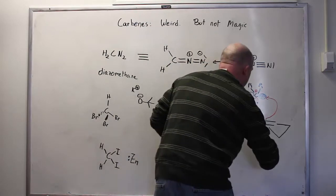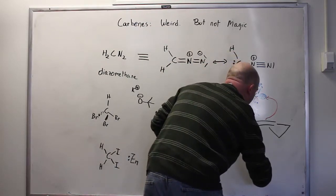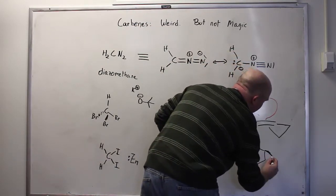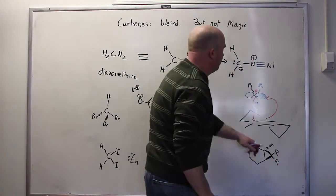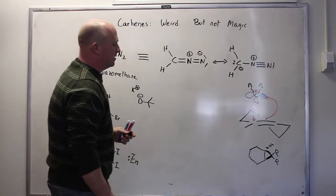And the result, as I've showed you, is the formation of a cyclopropane ring, and the R groups on the cyclopropane ring are going to be whatever the R groups were on the carbene to begin with.